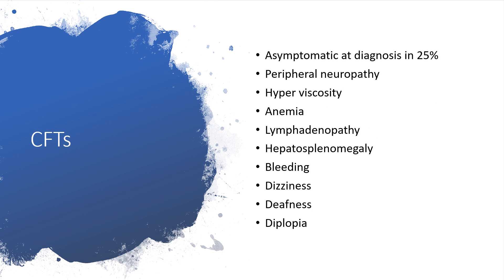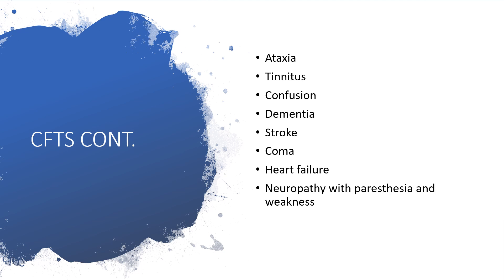What are the clinical features? You could be asymptomatic — that is the case in 25% of patients. Some will develop peripheral neuropathy due to destruction of myelin. Hyperviscosity will block blood flow. Anemia occurs because malignant cells infiltrate the bone marrow. Lymphadenopathy, hepatosplenomegaly, and bleeding due to thrombocytopenia are also seen. Dizziness from anemia, deafness, diplopia — where images appear double — and the possibility of ataxia, tinnitus, confusion, dementia, stroke, and coma when there is hyperviscosity can all occur. Heart failure and neuropathy with paresthesia and weakness are also possible.